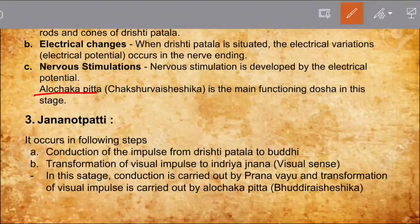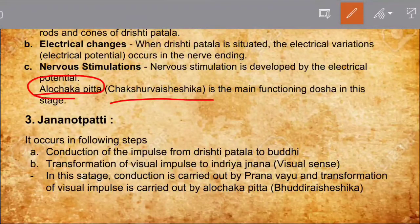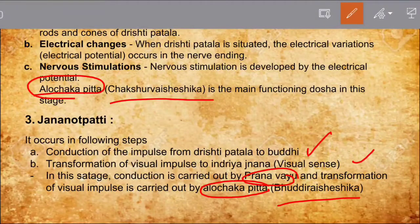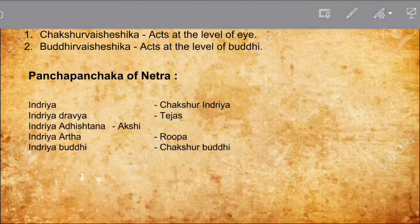Here Alochaka Pitta plays the main role, with Chakshu Vashashika as the main function at the Drushtipatala stage. In Jnanapati — the third stage — the following steps occur: conduction of impulse from the Drushtipatala to Buddhi, and transformation of the visual impulse into Indriya Jnana, that is visual sense. Conduction is carried out by Pranavayu and transformation by Alochaka Pitta. Functionally, Alochaka Pitta has two factors: Chakshu Vashashika, which acts at the level of the eye, and Buddhi Vashashika, which acts at the level of Buddhi.